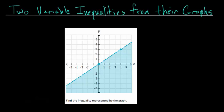In this video, I'd like to talk about how to find the two-variable inequality by looking at the graph. Notice that we have a dashed line and everything underneath the line is shaded. With these two-variable inequalities, what we want to do first is figure out what the equation of the line would be, ignoring that it's dashed and that we have the shading. We find the equation of the line first, and then using the shading and whether it's dashed or solid, we can determine the inequality.